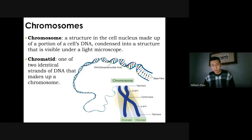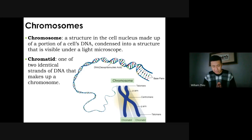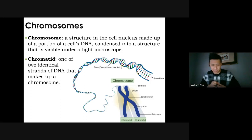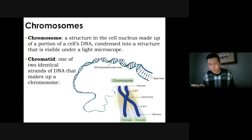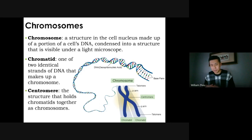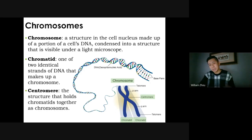Let's review chromosomes. DNA condenses and coils into a chromosome, which looks like an X. A chromatid is one of the two identical strands — in the picture, the left strand and the right strand are attached in the middle at the centromere. Each strand is a chromatid; the whole X is a chromosome. The centromere holds the chromosome together in the middle.